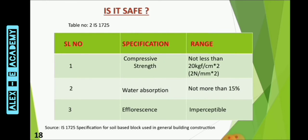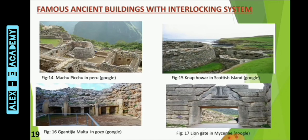The specification code IS 1725 describes the specifications for brick making, and interlocking bricks satisfy all the characteristics: compressive strength not less than 2 N/mm², water absorption not more than 15%, and eflorescence is imperceptible. Some famous ancient buildings with interlocking systems still exist today without any damage, which demonstrates that the interlocking system is very safe.